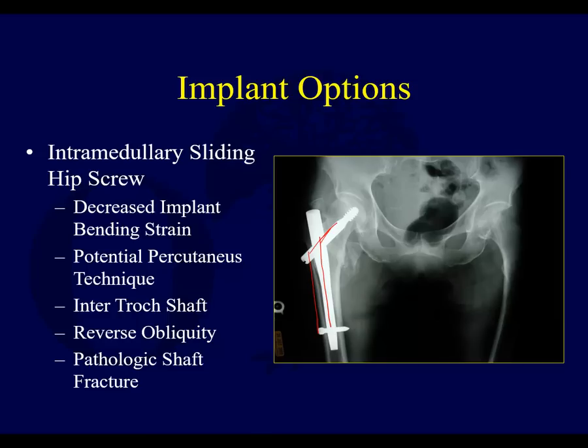That's a fair point, though the nail is a more expensive device. It does involve the abductors, and if you ever need to revise to a total joint, it's much harder. Also, even though the nail is inserted percutaneously, the blood loss is hidden — the patient is still bleeding.